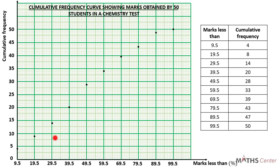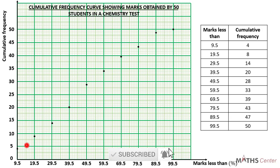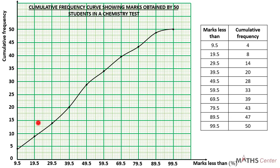The question says we should draw a cumulative frequency curve, so it means that we will join the points with our free hand to get the cumulative frequency curve. The title I'm using is: 'A cumulative frequency curve showing the marks obtained by 50 students in a chemistry test.' We are done with drawing the cumulative frequency curve for the distribution.